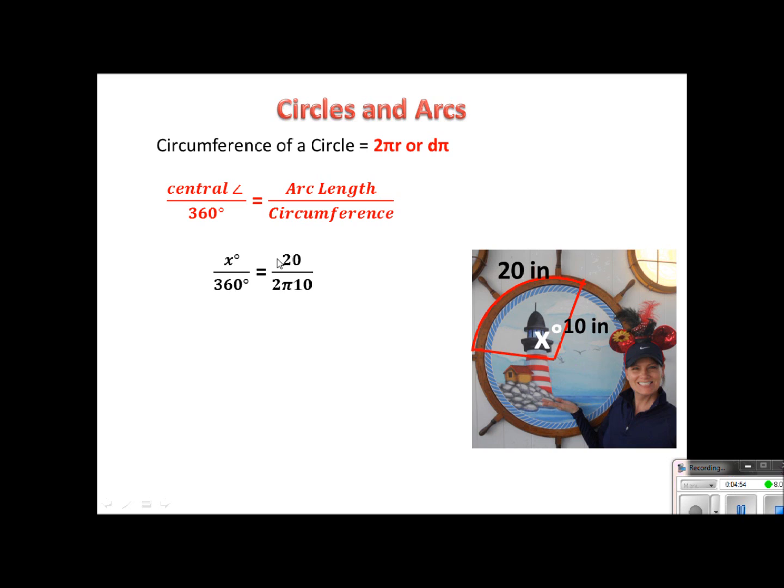This time I'm given the arc length. It's 20 inches, and I'm given the radius. It's 10 inches. So remember, we're going to use this formula. We can use either one depending on the information we've been given. Well, I've been given the radius, so I'm going to do 2πr, which then, simplifying that, 2 times 10 is 20.